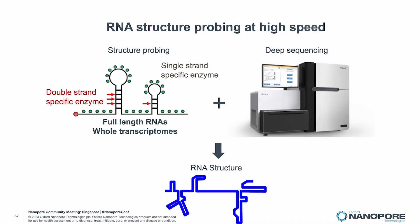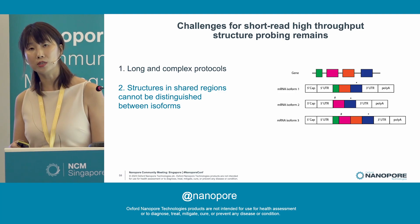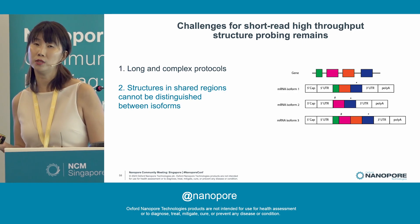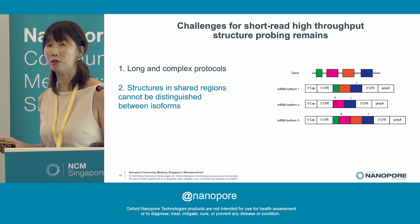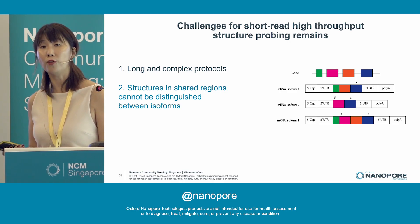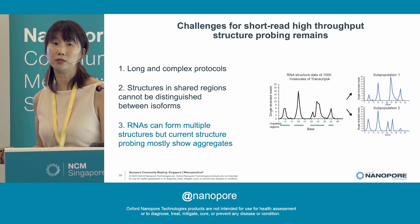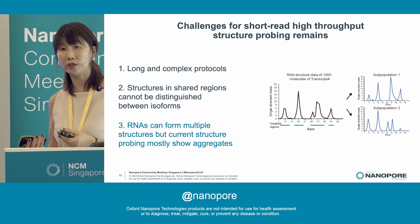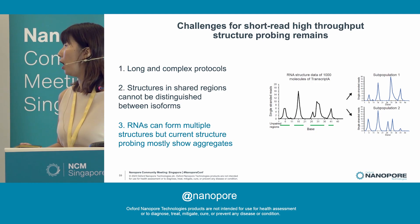One of the challenges when we first started these high-throughput sequencing protocols is that they're typically long and really complex — they take about a week to make the libraries, convert into cDNA, and sequence. Also, because we started using short-read sequencing, RNA regions present in shared exons meant we were unable to identify isoform-specific structures. Additionally, RNA can actually form multiple conformations in solution, and by looking at RNA structures as an aggregate, we are unable to understand how it can form multiple conformations with different functions.